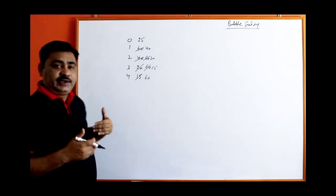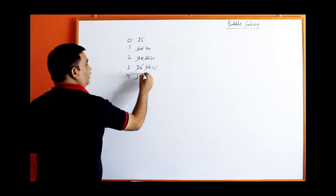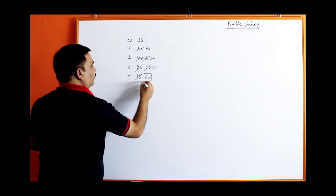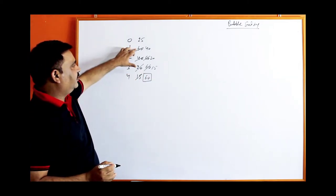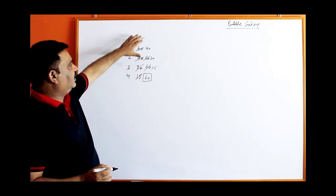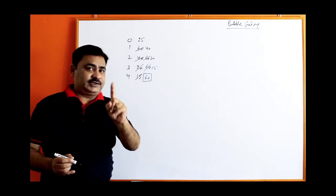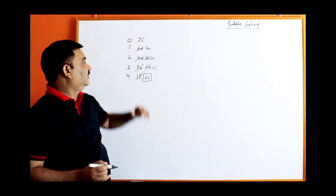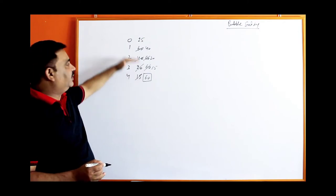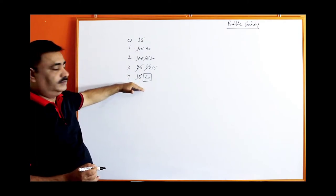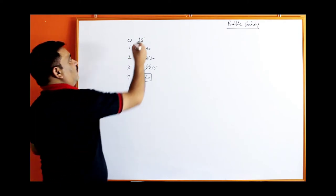So what we got at the end? At the end, the biggest value 60 was at the beginning, but now after the process it is at the last position. So one value is arranged and it comes at its position at the end — the biggest one. This is called the first round.